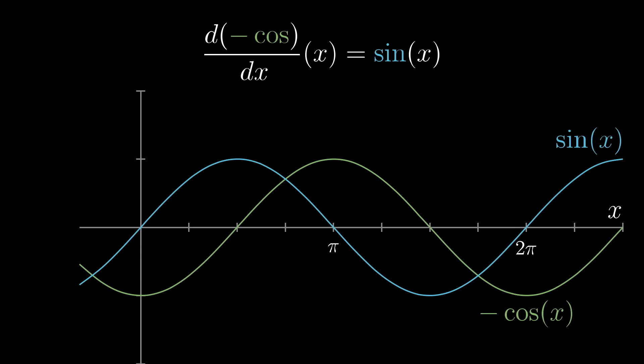And to gut check yourself on that, look at this graph of negative cosine. At zero, the slope is zero. And then it increases up to some maximum slope at pi halves, and then goes back down to zero at pi. And in general, its slope does indeed seem to match the height of the sine graph at every point.